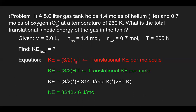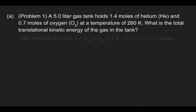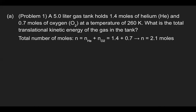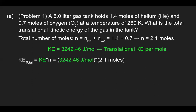But we want the total — this value is per mole. So considering the total number of moles, it doesn't really matter if it's helium or a monatomic or diatomic gas molecule. We treat them all equally, combining the moles to get 2.1 moles total. Multiplying 2.1 moles by the translational kinetic energy per mole, we get the total energy of 6,809 joules.